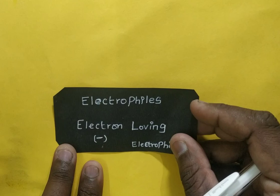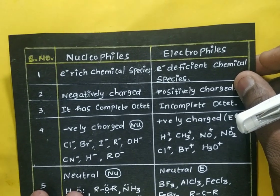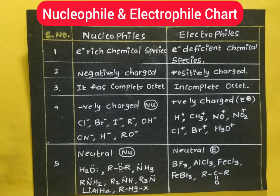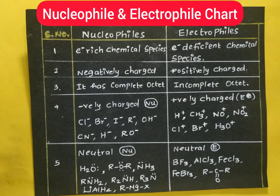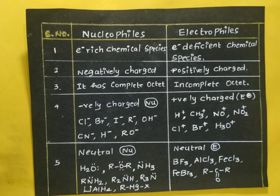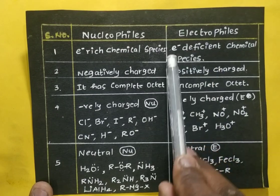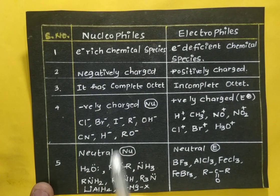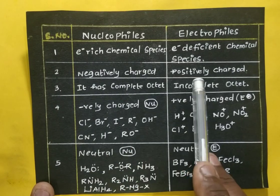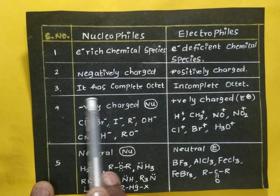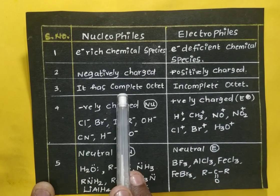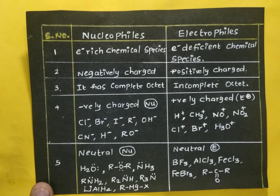This chart gives the entire idea about nucleophiles and electrophiles. Nucleophiles are electron-rich chemical species, while electrophiles are electron-deficient chemical species. Nucleophiles are negatively charged and have a complete octet configuration. Electrophiles are positively charged and have an incomplete octet. We will look at examples to find out how to determine complete versus incomplete octet configuration.